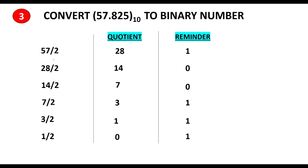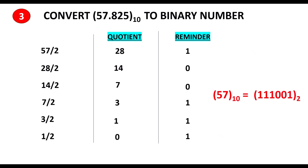Now take the remainders. This is the MSB bit and this is the LSB bit, and you write starting from the MSB going upwards. So 57 in base 10 is 1 1 1 0 0 1 in binary.